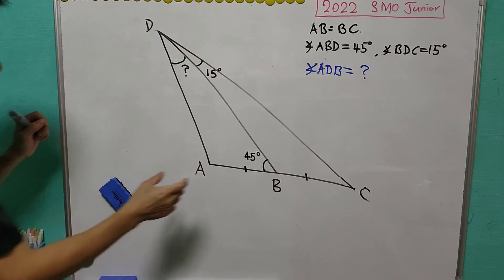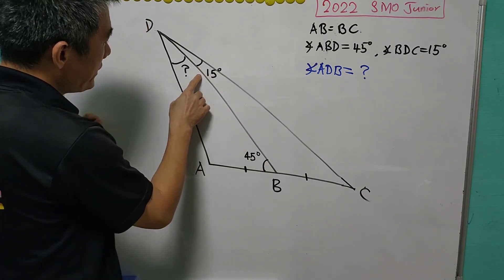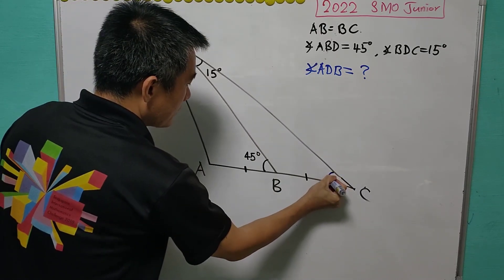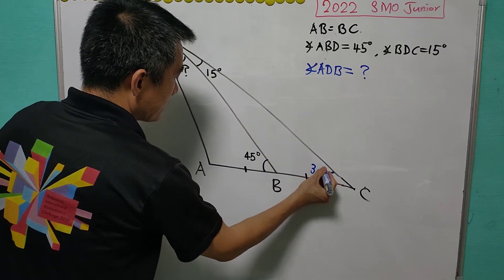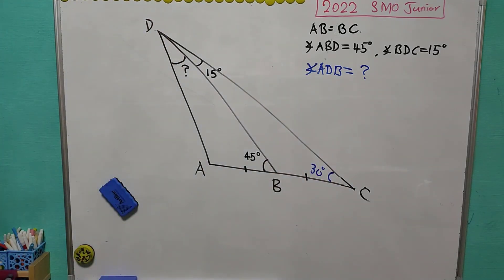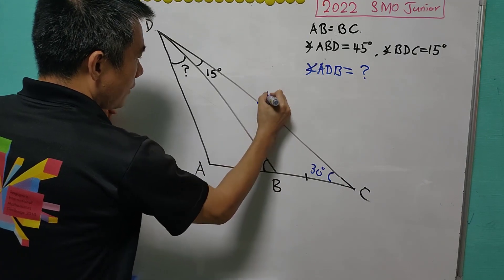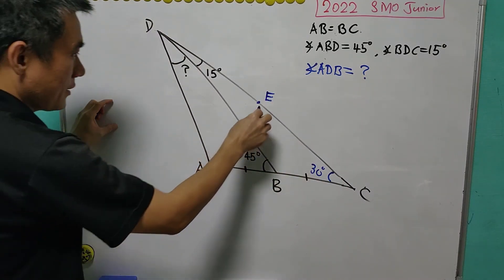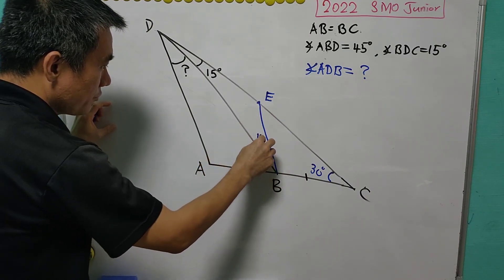First of all, we know that the angle ABD is 45 degrees and the angle BDC is 15 degrees. Then, we know that the angle ACD is 30 degrees. Now, we are going to construct a point E on CD such that the angle EBD is also 15 degrees.